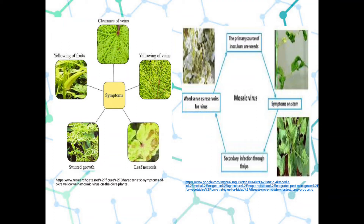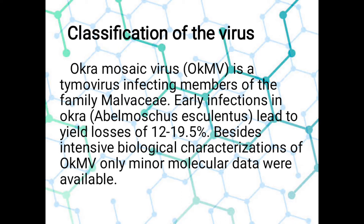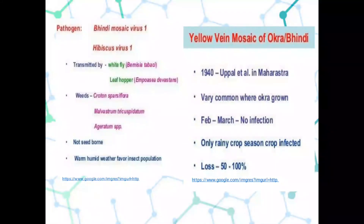Symptoms on the stem involve secondary infection through thrips. The okra mosaic virus (OKMV) is a thymovirus infecting members of the family Malvaceae. Early infections in okra lead to yield losses of 12 to 19.5%. Besides intensive biological characterization of OKMV, only minor molecular data were available. The pathogen — also known as hibiscus virus 1 — is transmitted by whitefly and leafhopper, as well as weeds. You should be mindful of this data as it is important in identifying what type of mosaic virus is present.